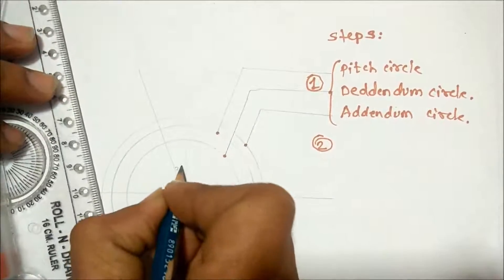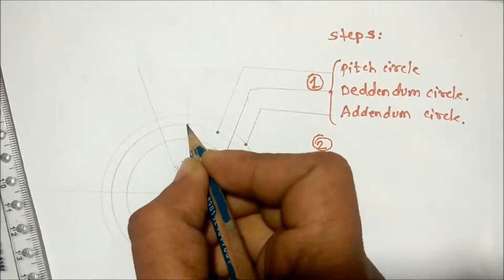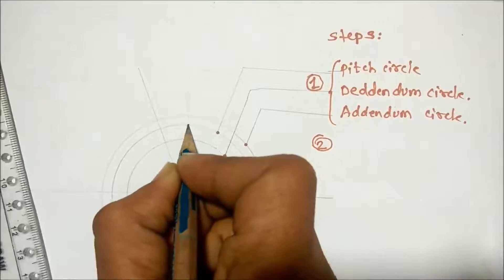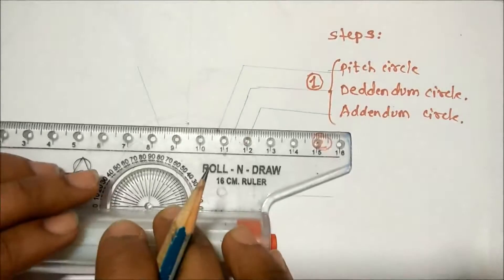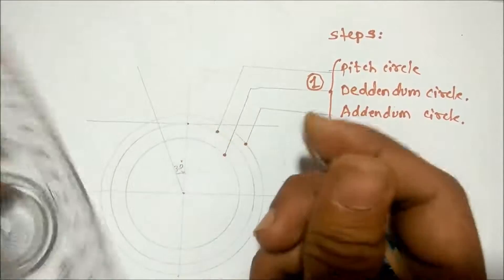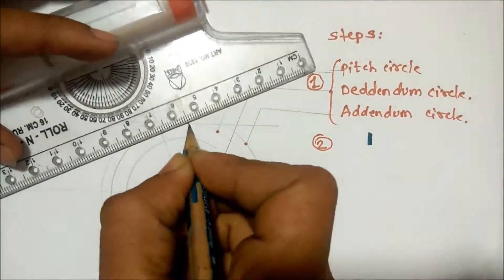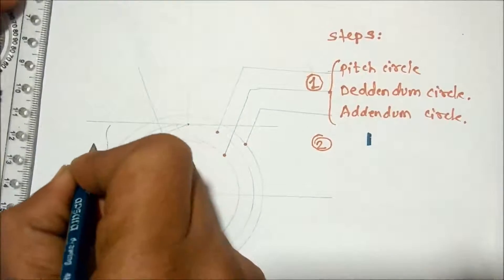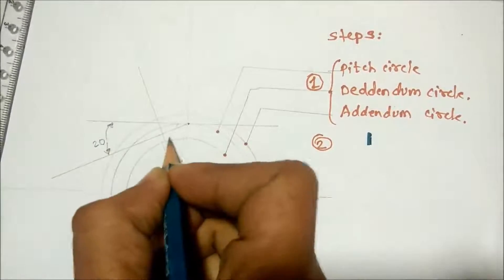Mark the 20 degrees on the pitch circle at the vertical axis point. Draw a horizontal line at that point, then take 20 degrees from there and mark it. For the example here, we mark the 20-degree angle on both sides.